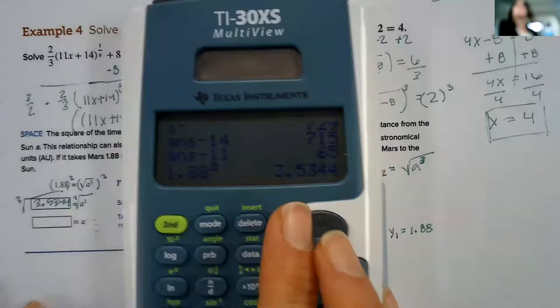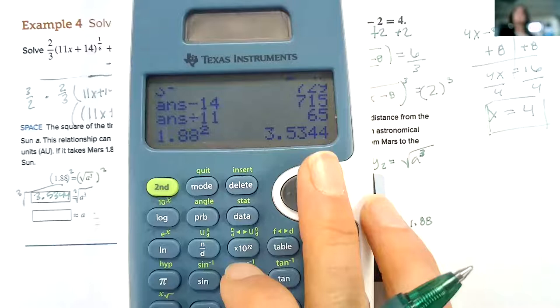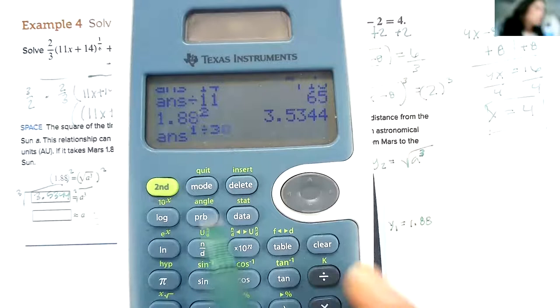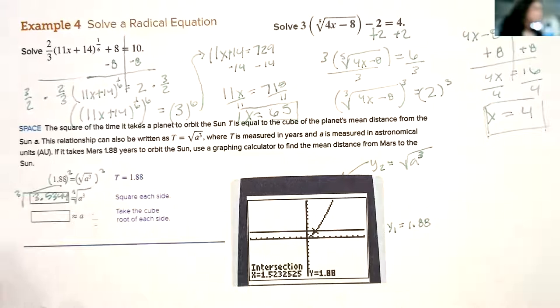Now, how would I raise this to a cube root to finish solving that? All that you do is you take that to a power of one third. There's not a cube root button here, so we're just going to take it to a power of one third. It's the same thing as a cube root, and we get 1.523252. Let's just round that to 1.5.